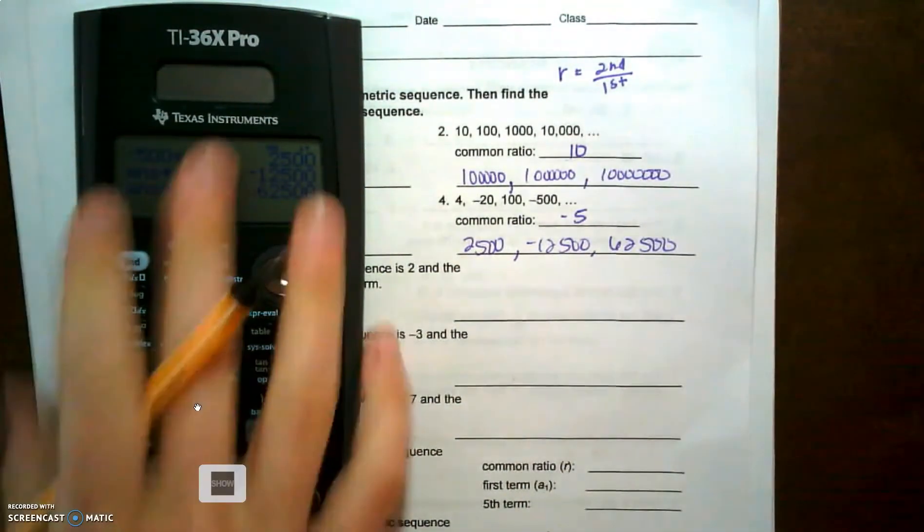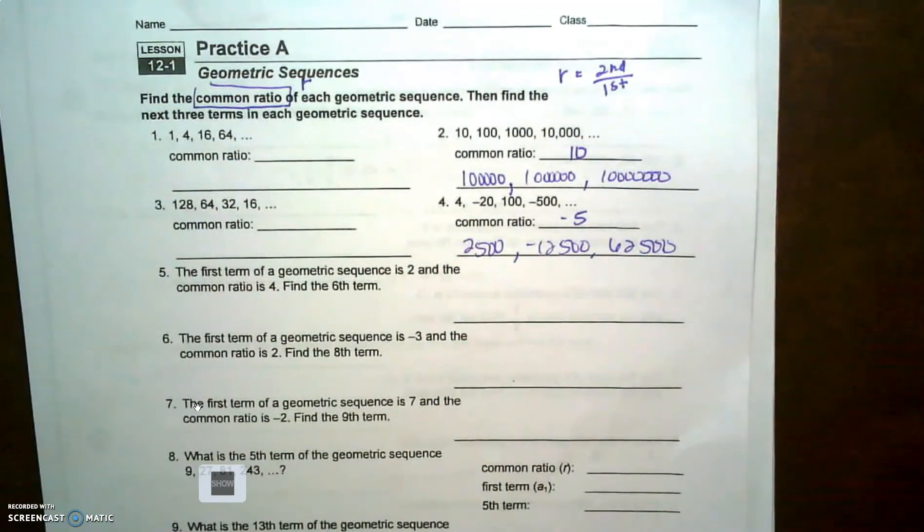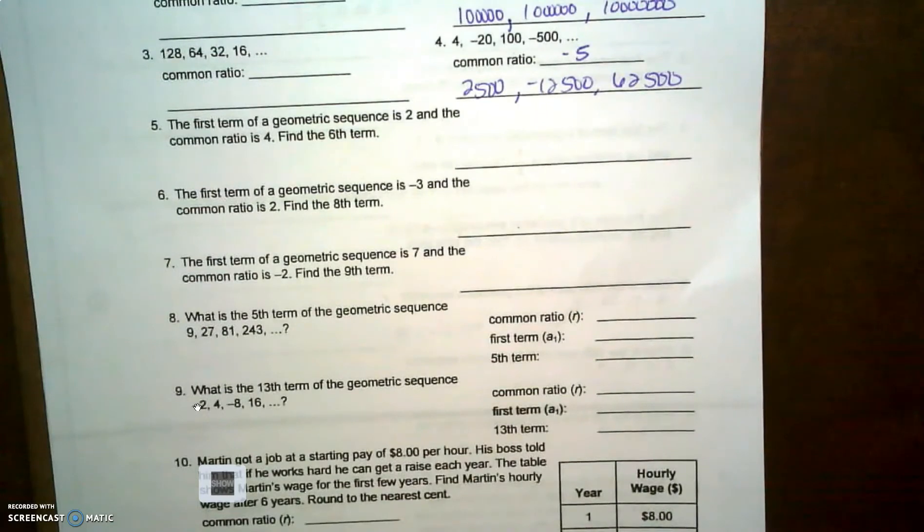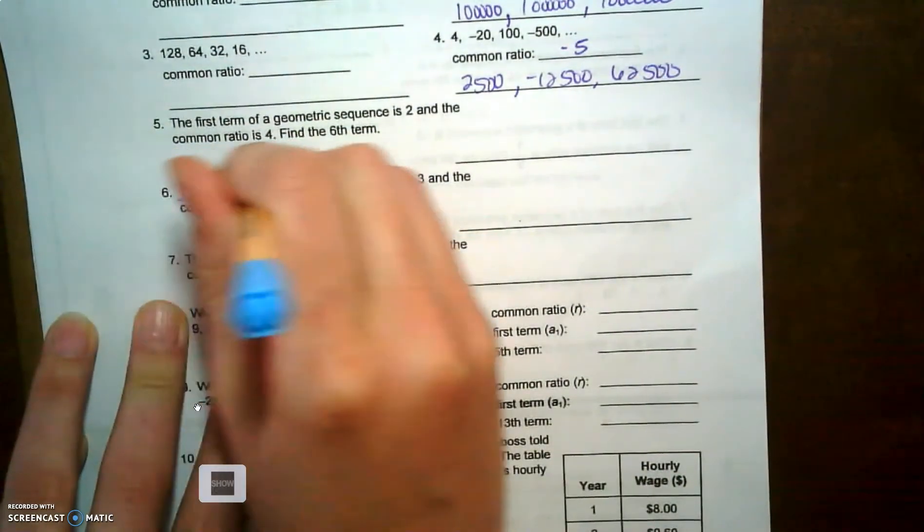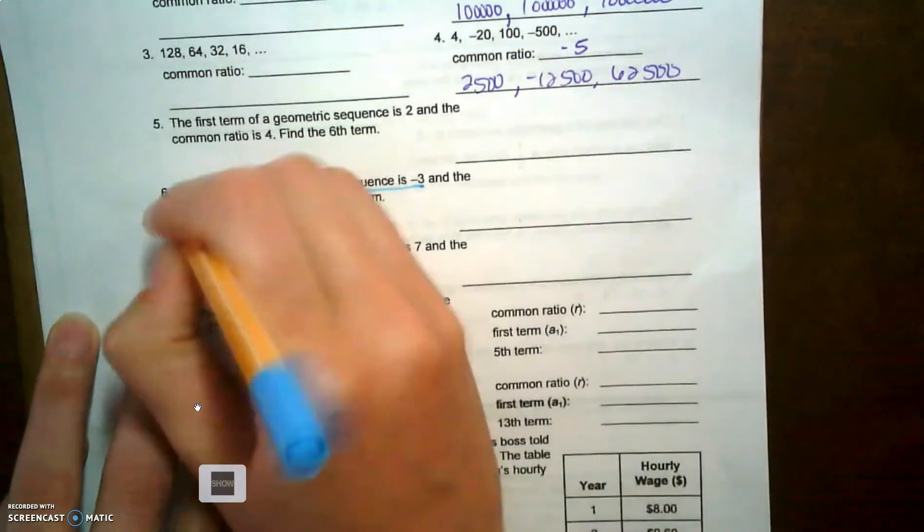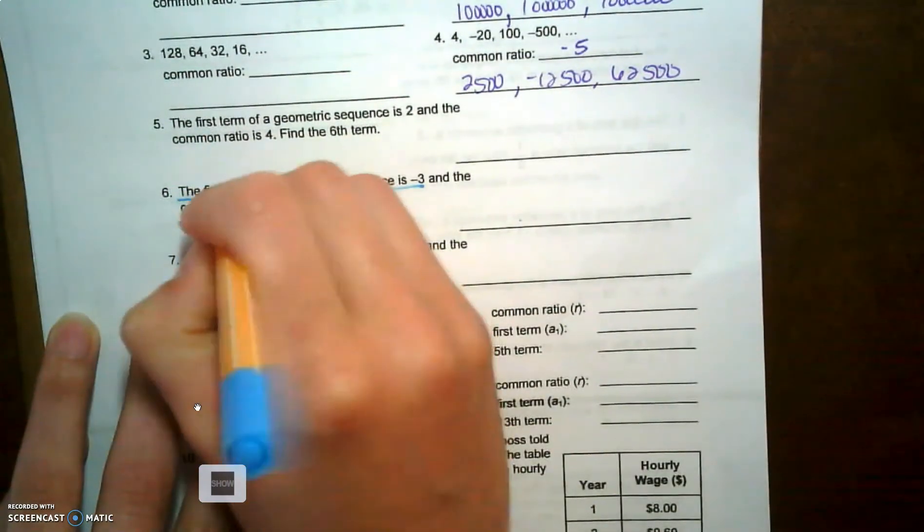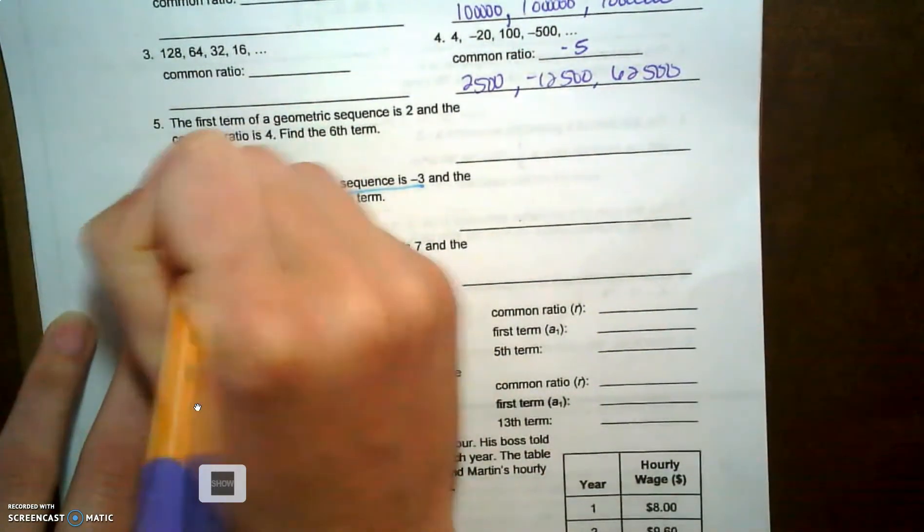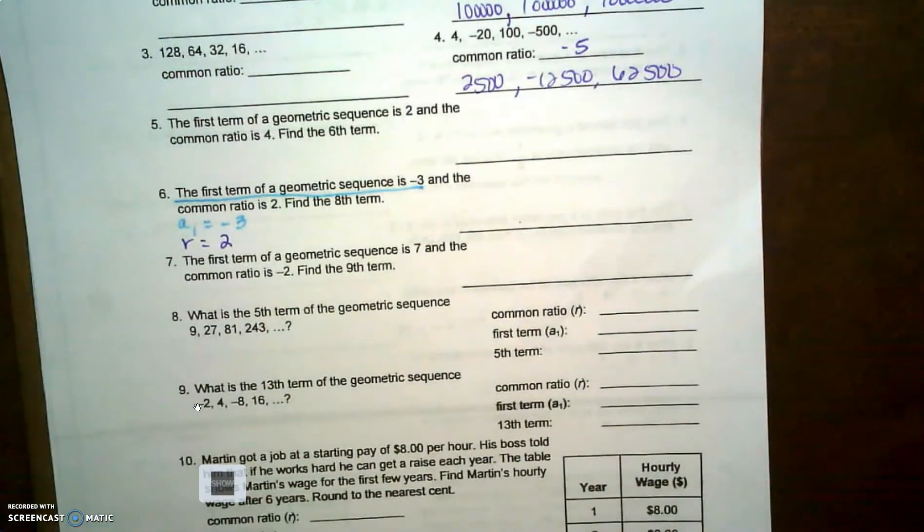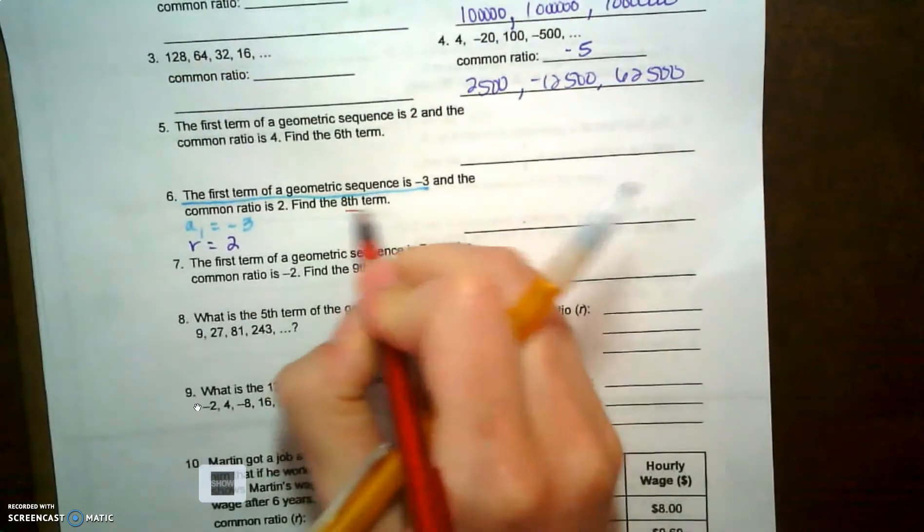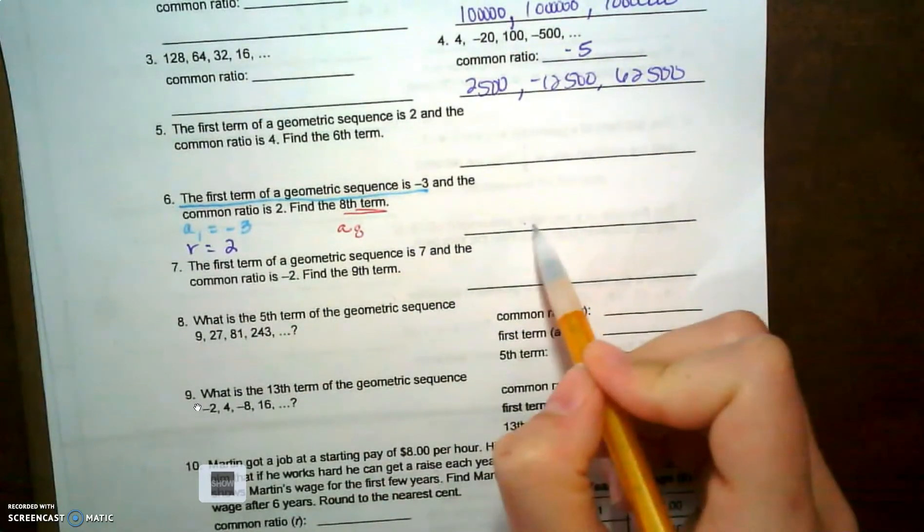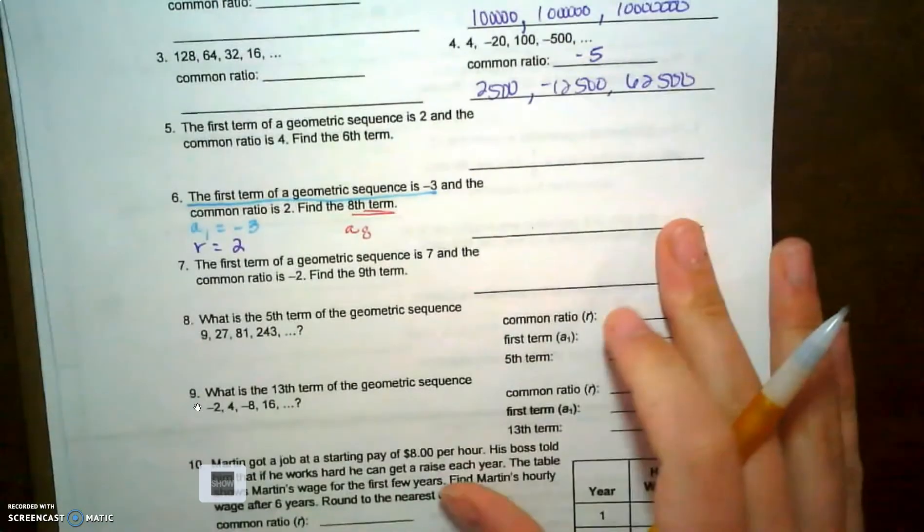Okay, just building a sequence, being able to find that pattern. Look at number six. The first term of a geometric sequence is negative three, so I'm gonna break everything down that I see and write it. So a sub one is negative three, the common ratio is two, and they want us to find the eighth term, so a sub eight.